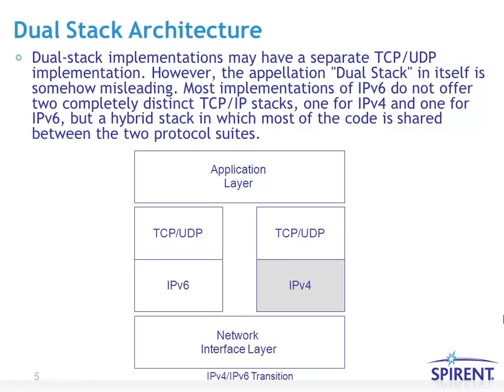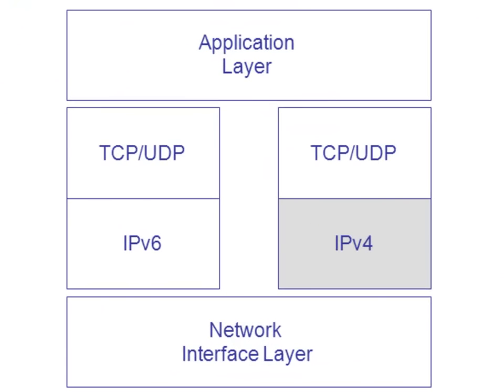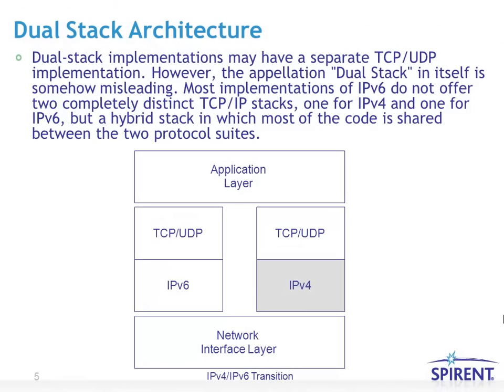The idea of the dual stack architecture is to have a separate TCP, UDP, and therefore IPv4 and IPv6 implementation. However, it is a little misleading because most implementations do not actually offer two completely distinct TCP/IP stacks. Rather, they have some form of a hybrid stack in which most of the code is shared between the two protocol suites.